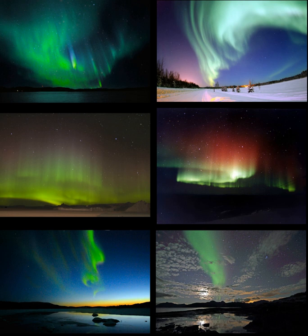A typical auroral display consists of these forms appearing in the above order throughout the night. Red: at the highest altitudes, excited atomic oxygen emits at 630 nm. The low concentration of atoms and lower sensitivity of eyes at this wavelength make this color visible only under more intense solar activity.